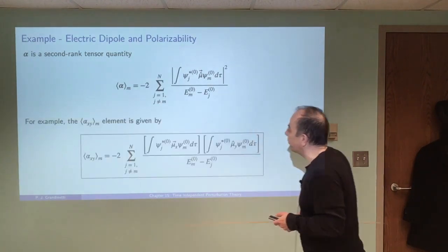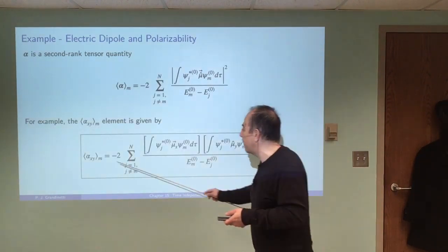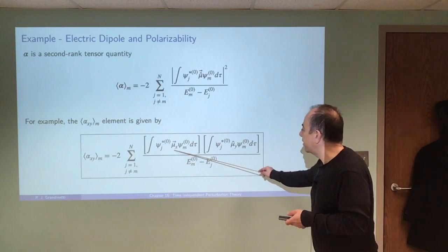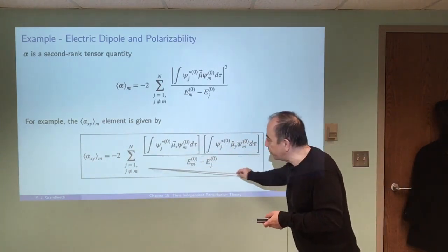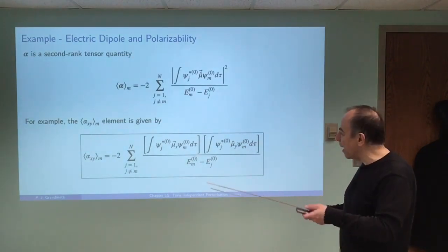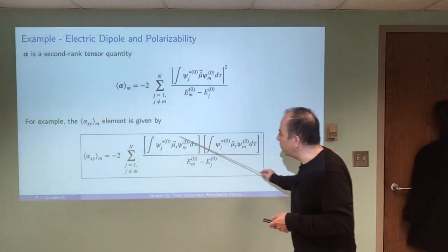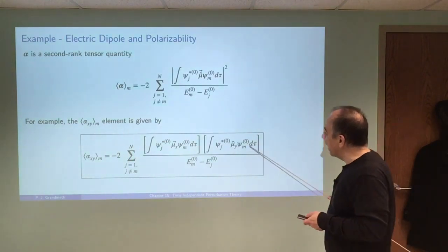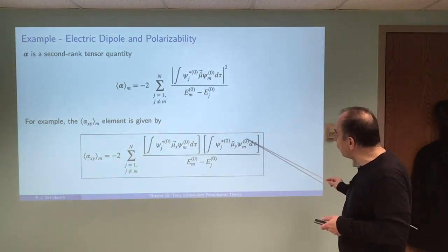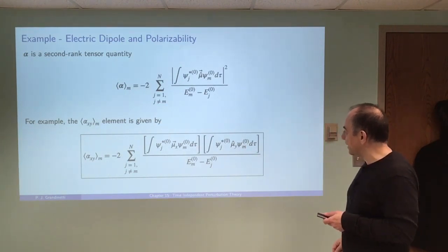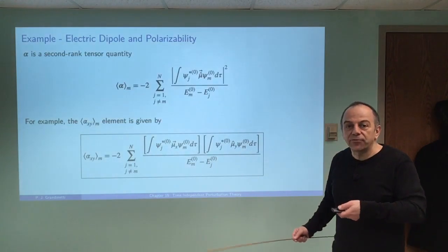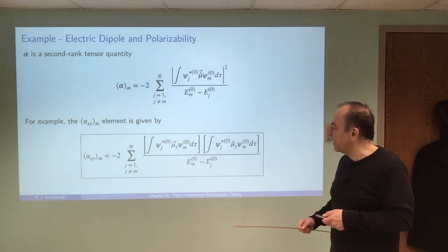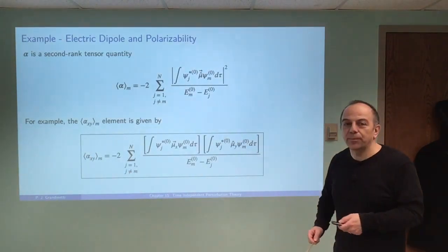For the m-th eigenstate, the change in energy is given by this polarizability tensor used in the energy correction expression. Since it's a tensor, each element — say alpha-xy — corresponds to the mu-x integral times the mu-y integral. Similarly for xz, yz, xx, and so on. You end up evaluating 9 integrals, but since it's a symmetric matrix only 6 are needed. These give the full polarizability tensor if you know the zeroth-order energy eigenstates and eigenvalues. That's it for this chapter — in the next chapter we'll take advantage of these perturbation approaches for solving problems.